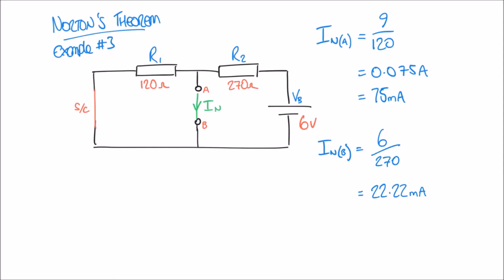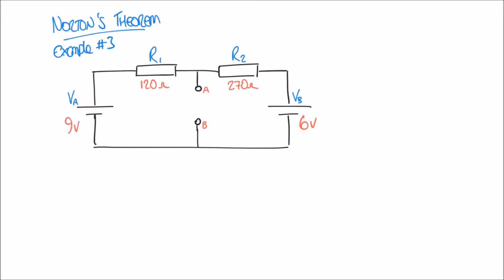My total Norton current is simply the sum of these two separate currents. VA on the left-hand side supplies 75 milliamps from terminal A to terminal B, and VB on the right-hand side supplies 22.22 milliamps. So the total Norton current IN is 97.22 milliamps. That completes step one of Norton's theorem — working out the closed circuit current flowing from terminal A to terminal B.